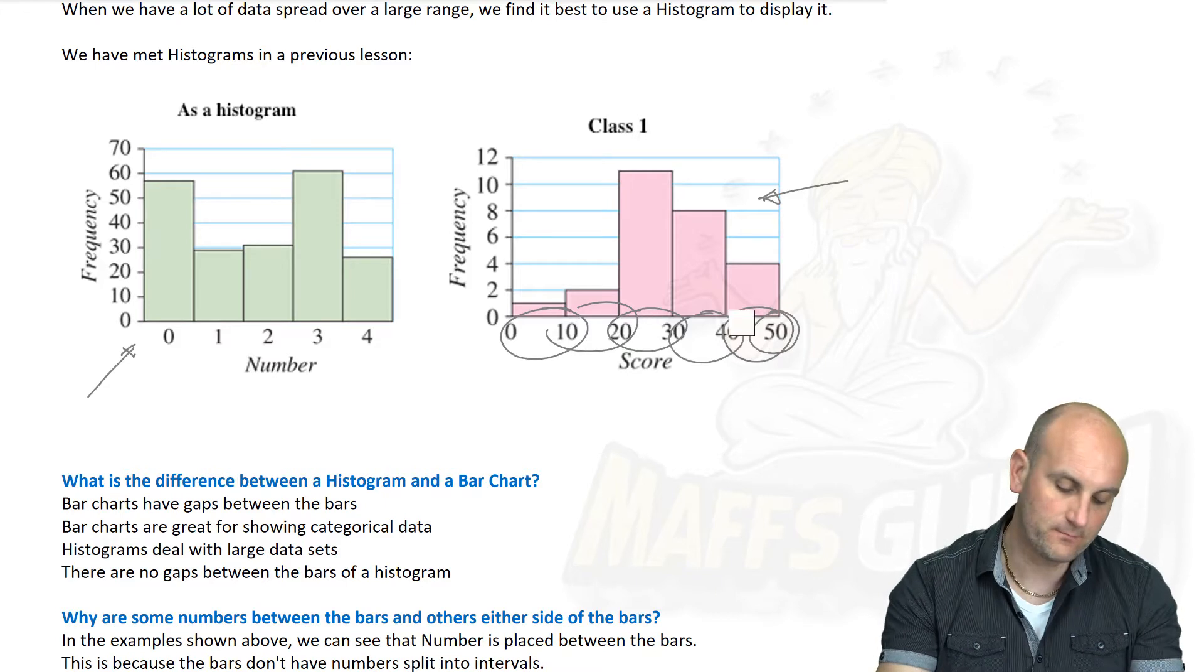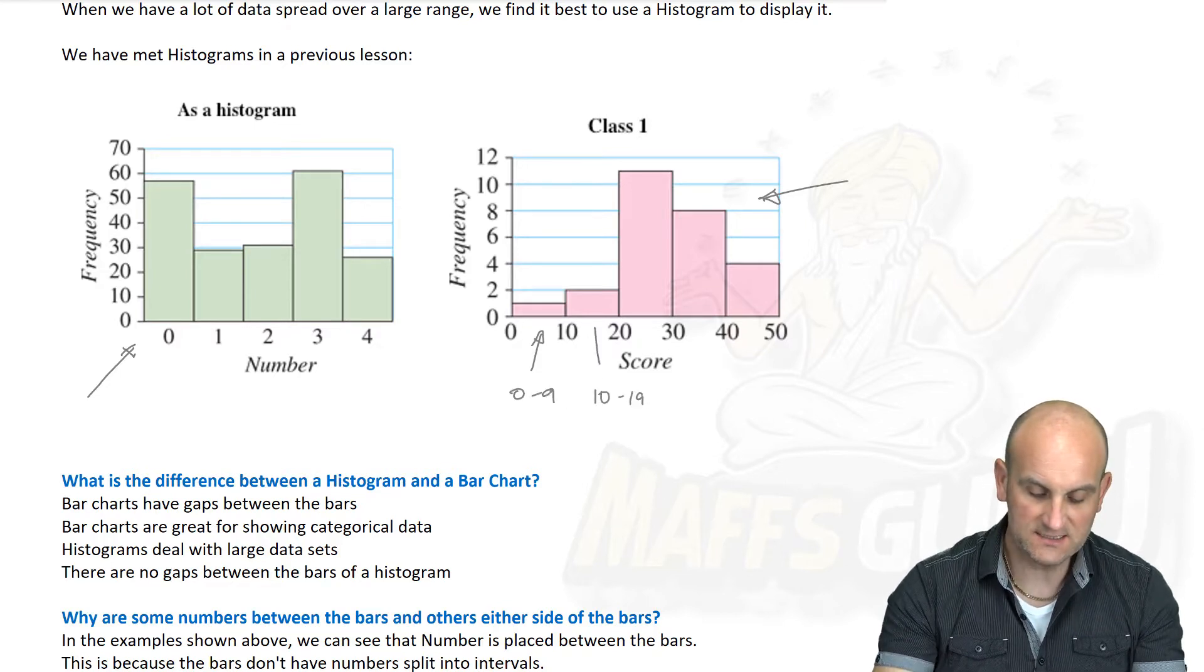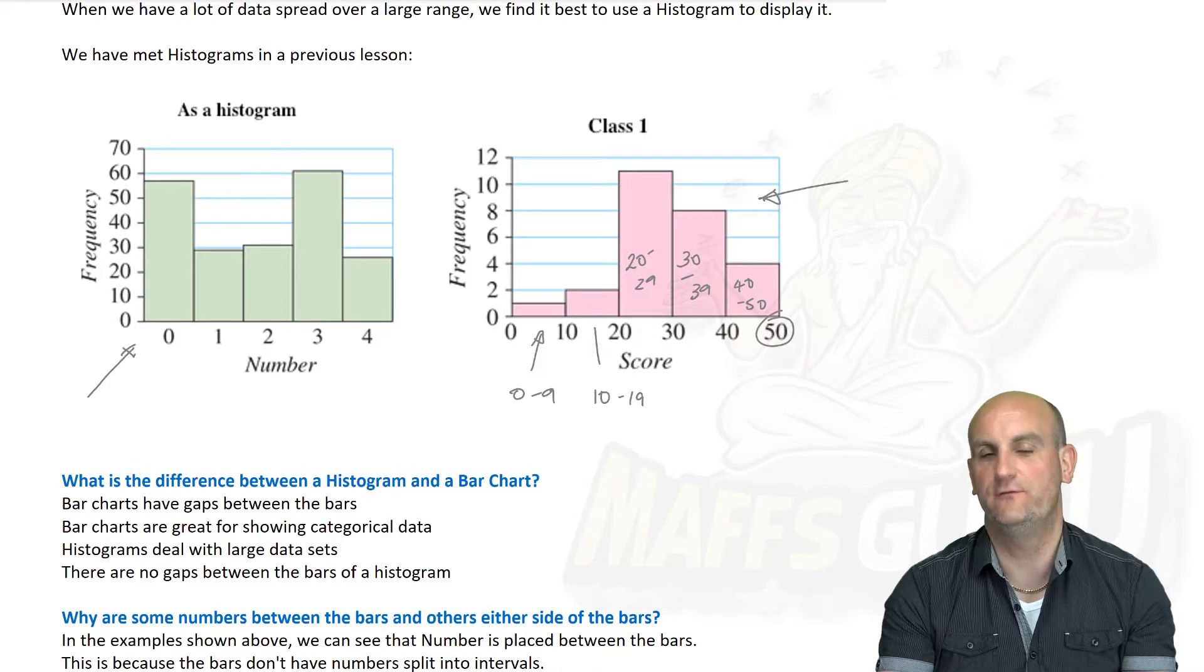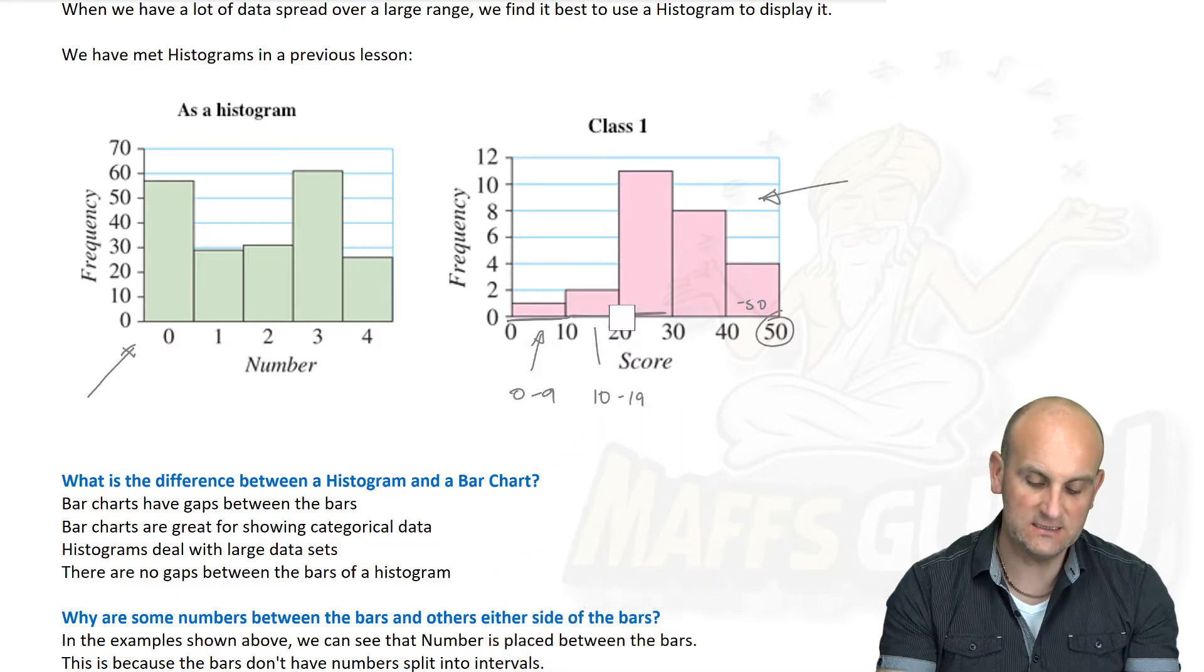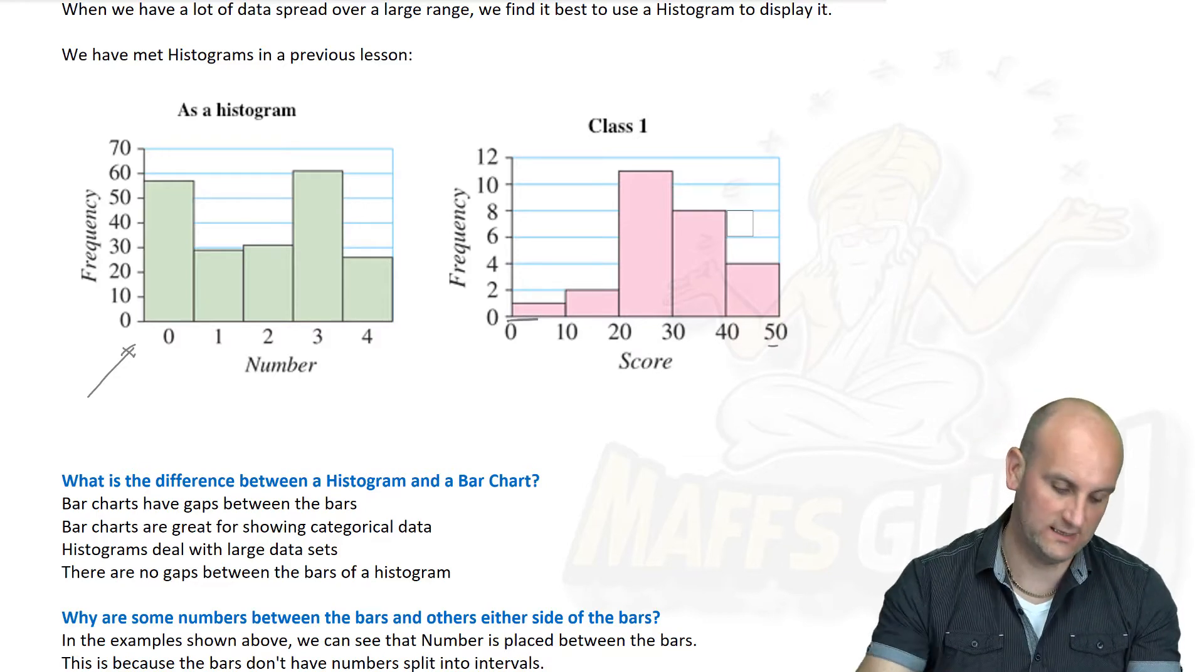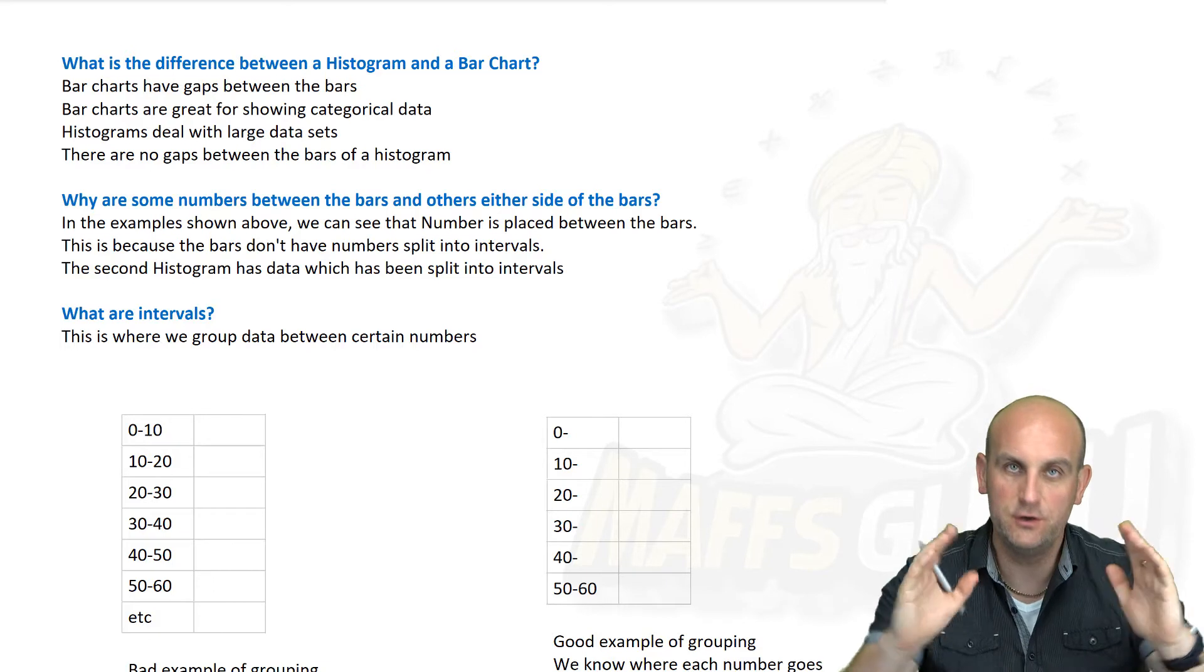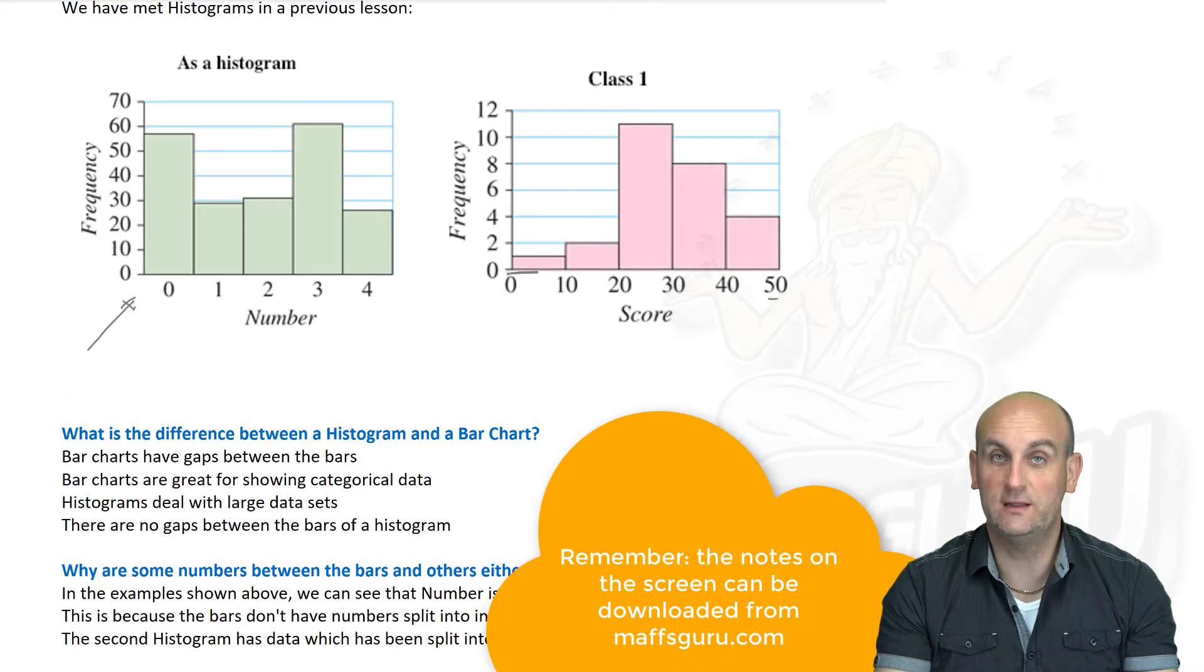With regard to the numbers below what this bar now stands for is 0 to 9. This bar here stands for 10 to 19. This bar here stands for 20 to 29, 30 to 39 and to buck the trend that one actually stands from 40 to well really 49 but we actually have 50 there to finish the interval off. So what we're saying is the interval here is actually 10 for each. It's important to know that the difference between the histogram and a bar chart is well a histogram deals with numerical data. A bar chart deals with categorical data. But the histograms have no gaps between the bars. Bar charts have gaps.